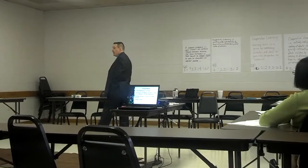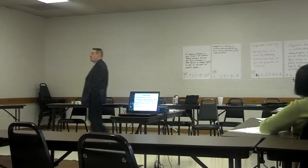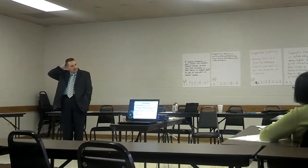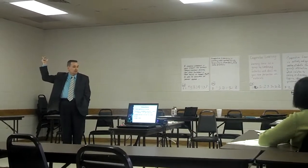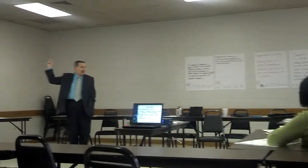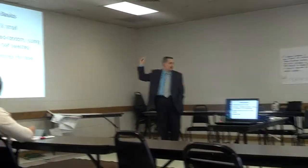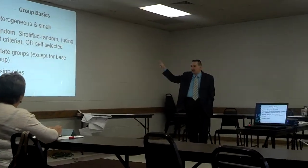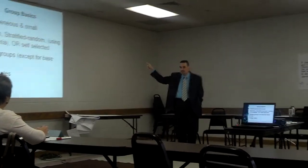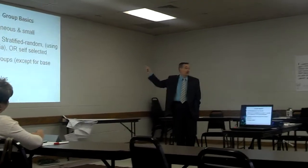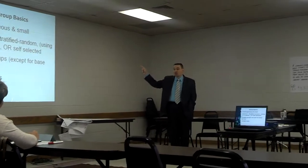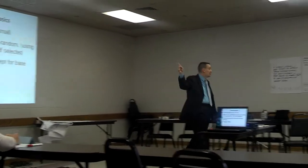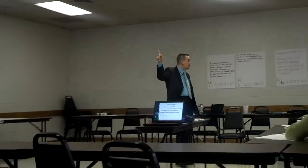Random, stratified random — that means just two to three criteria. You see self-selected, and I would really steer clear of that. The research says you can do that, but I don't think it's a good idea to let students self-select their formal groups, because what's going to happen? Friends. The A students will group together, and that's really counterintuitive to the whole reason we're doing this.